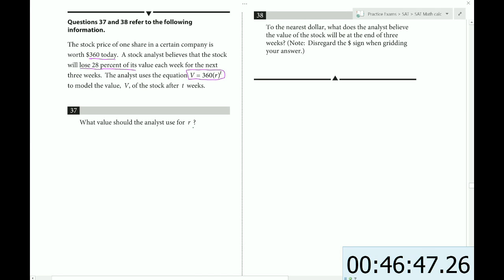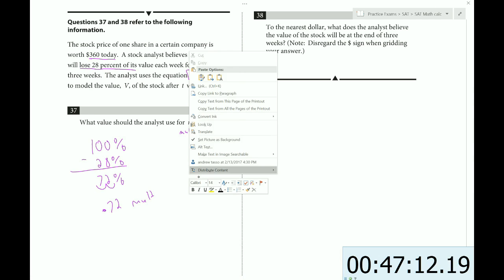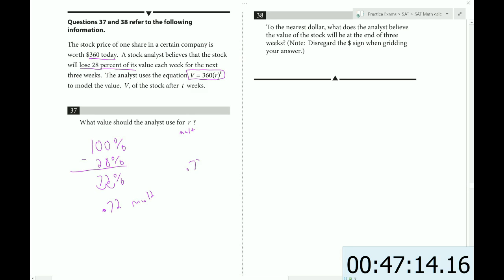So what should the analyst use for R? R is going to be the multiplier by which we are going to reduce this number. If it's losing 28%, we need to apply a 28% decrease. So we subtract from 100, and that gives us 72%. Then we realize that this as a decimal would be 0.72. So this is what I would call the multiplier, and that is what we use for R. So R is going to equal 0.72.